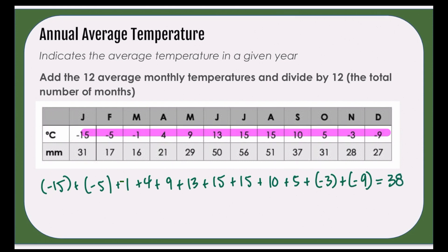We're going to take that 38 and divide by 12, which of course is your total number of months. That's going to give us 3.16, and we're going to round to one decimal place, so it's going to be 3.2 degrees Celsius. So our annual average temperature is 3.2 degrees Celsius.